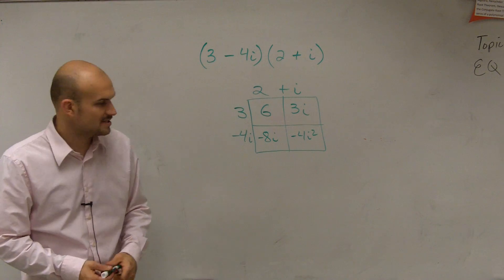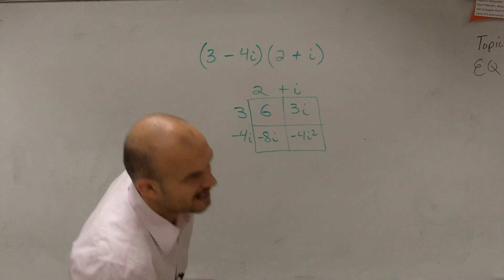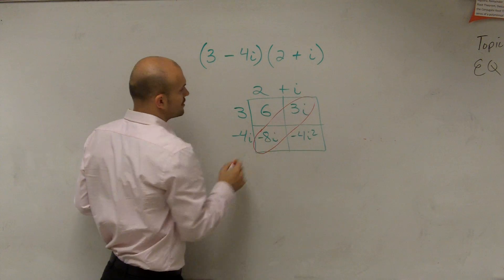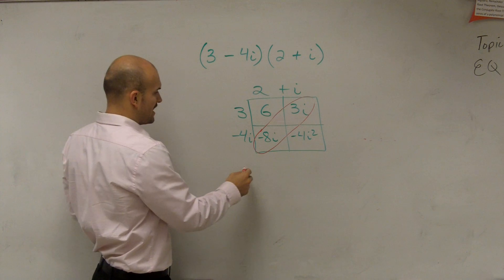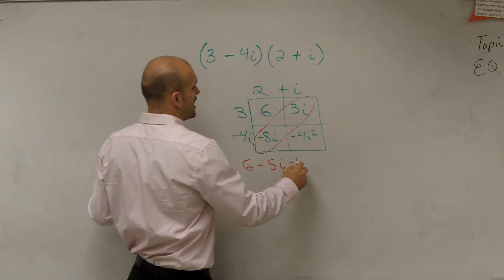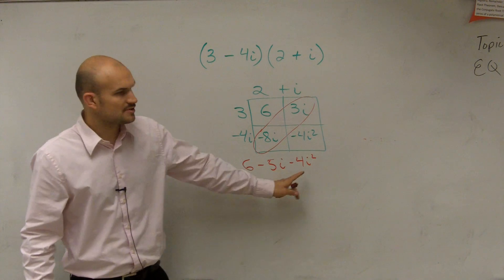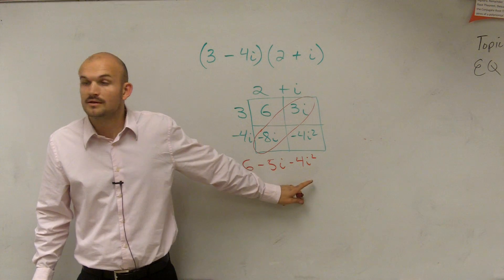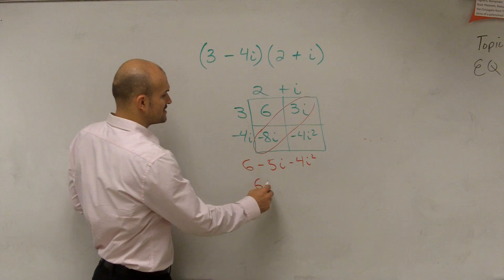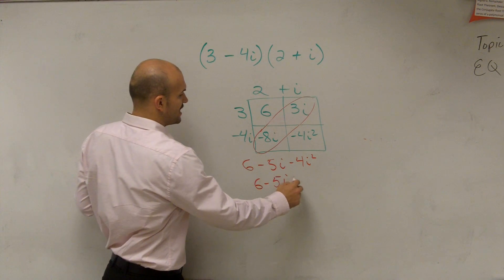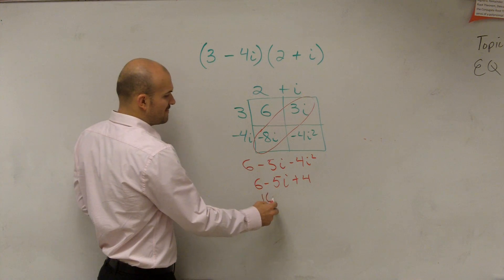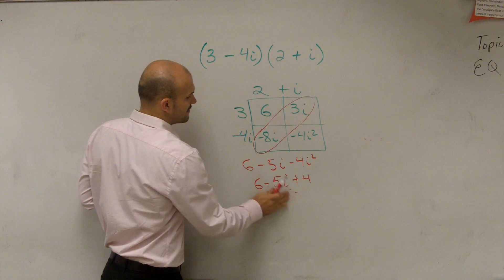We can combine these because they both have an i, just like combining variables. I'm going to circle these and say these are like terms. So now my answer is 6 minus 5i minus 4i squared. However, do you remember what i squared represents? Negative 1. Therefore, negative 4 times negative 1 is positive 4. So I have 6 minus 5i plus 4. Now I can combine the 4 with the 6. My final answer is 10 minus 5i.